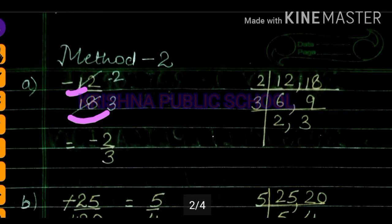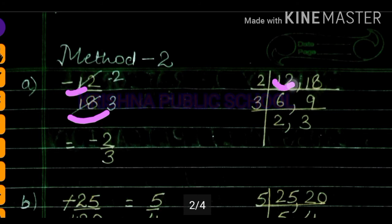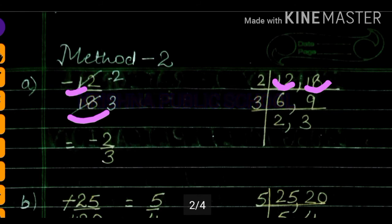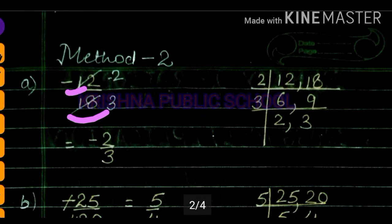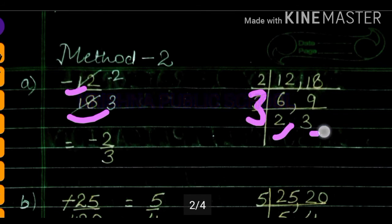We need to remember that the denominator should not be negative. In the second method, we find the LCM. Here we have 12 and 18. We divide them: 12 and 18 give us 6 and 9. Breaking further: 3 into 2 gives 6, and 3 into 3 gives 9. So the common factor is 6.